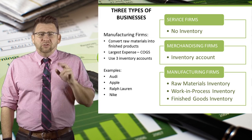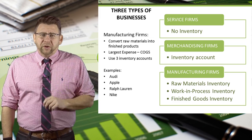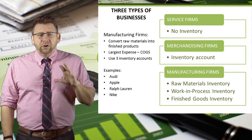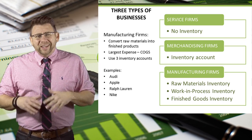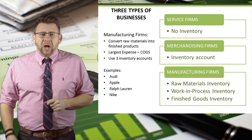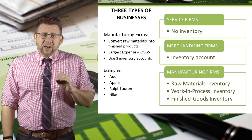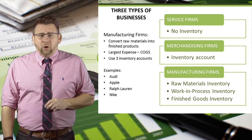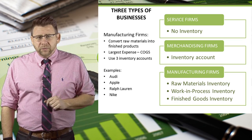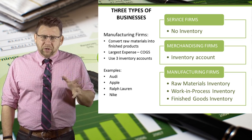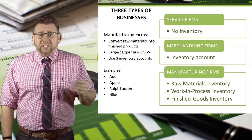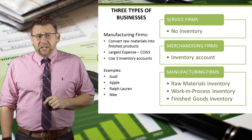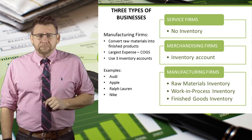Manufacturing companies use labor and other inputs, including plant and equipment, to convert raw materials into a finished product. They sell their products primarily to retailers and wholesalers, but also to consumers via outlet stores. Their largest expense also tends to be cost of goods sold.